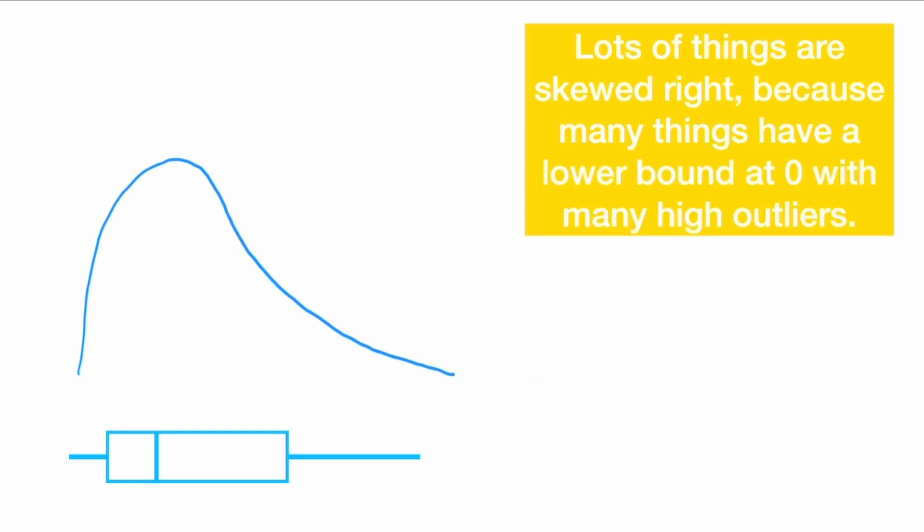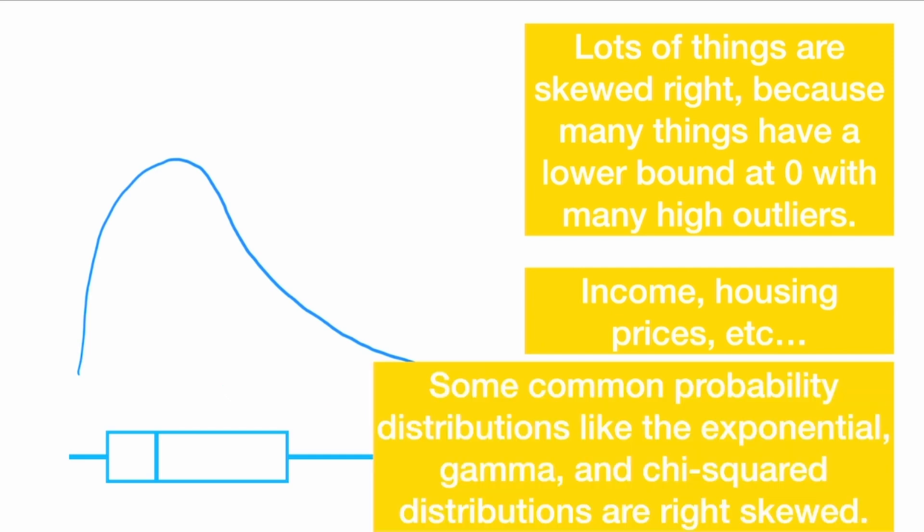And lots of things are skewed right. This happens because many things have a lower bound at zero with many high outliers. So things like income or housing prices are typically skewed to the right. Most people are sort of average, and then we have some people who are high outliers. And many common probability distributions like the exponential distribution, gamma distribution, and chi-square distribution, along with many others, are right skewed.